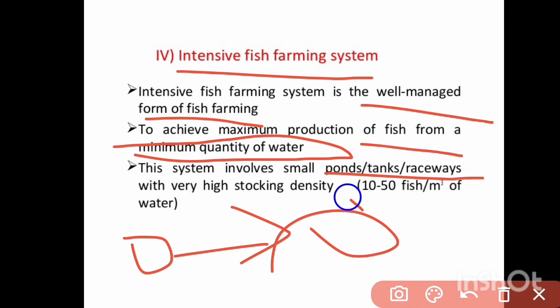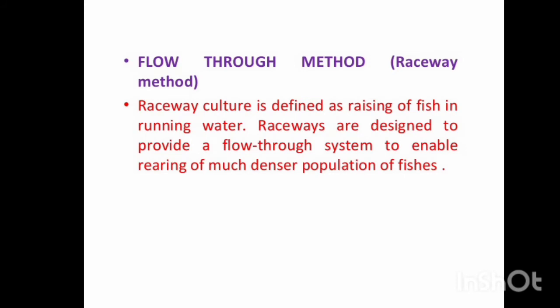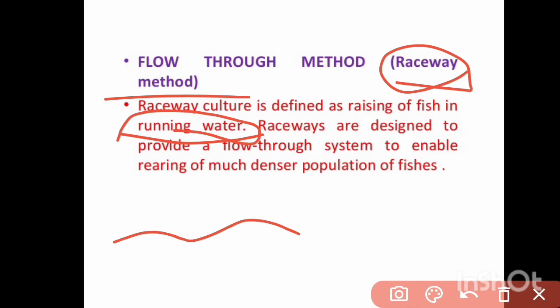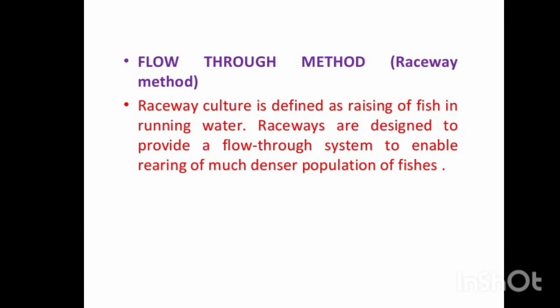Intensive farming includes flow-through systems. The raceway method is a flow-through method. Raceway culture is defined as raising fish in running water, providing a river-like environment. Raceways are designed to provide a flow-through system to enable rearing of a much denser population of fishes.